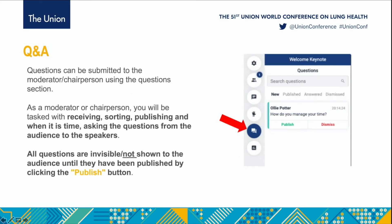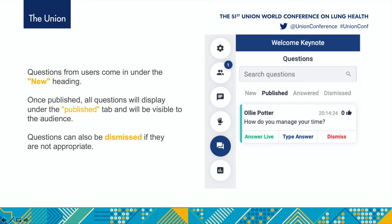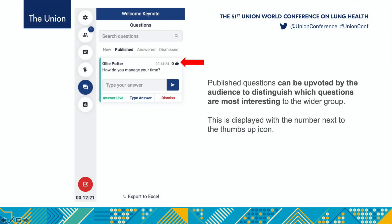Questions can be submitted to the moderated chairperson using the questions section. As a moderator or chairperson, you will be tasked with receiving, sorting, publishing, and when it is time, asking the questions from the audience to the speakers. All questions are invisible — not shown to the audience — until they have been published by clicking the publish button. Questions from users come in under the 'New' heading. Once published, all questions will display under the published tab and will be visible to the audience. Questions can also be dismissed if they are not appropriate. Published questions can be upvoted by the audience to distinguish which questions are most interesting to the wider group, displayed with the number next to the thumbs up icon.